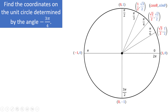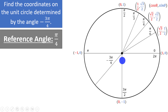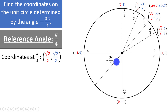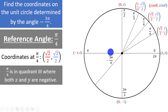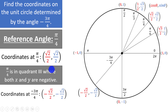Let's find the coordinates on the unit circle determined by negative 3 pi over 4. Since we are measuring a negative angle, we move clockwise. Negative 1 pi over 4 is the first step, negative 2 pi over 4 is next, so negative 3 pi over 4 is in the third quadrant. The reference angle is pi over 4, because we are pi over 4 radians below the negative x-axis. The coordinates at pi over 4 are (√2/2, √2/2). Since we are in quadrant 3, both x and y are negative. Therefore the coordinates at negative 3 pi over 4 are (−√2/2, −√2/2).